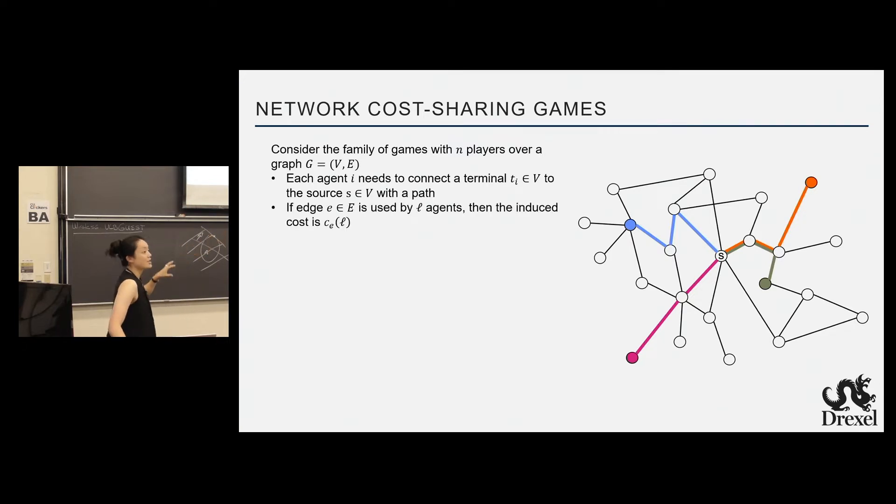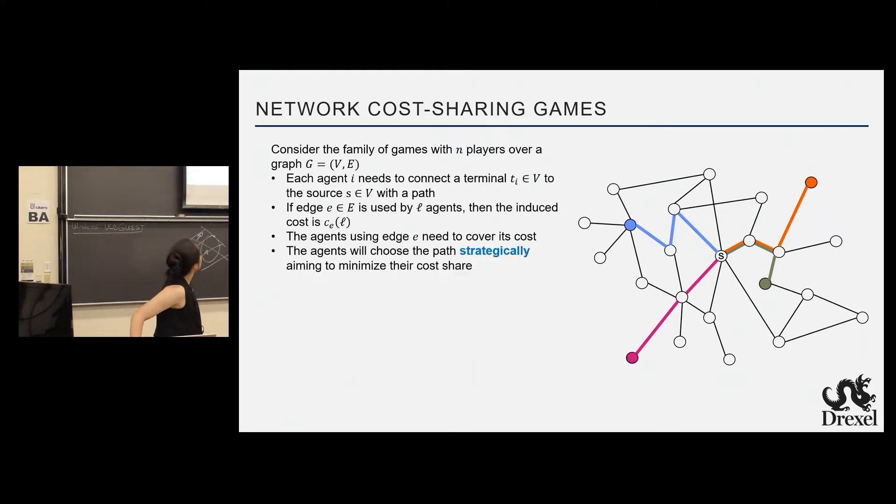Now each edge has a cost, and then the cost is a function defined by the load on the cost. So if, for example, for some of the edges, the load is two, like the orange and the green agent actually share it. And for the rest of the edges, the load is one. The agent using an edge needs to cover the cost incurred by their existence. And the agent will choose the path strategically aiming to minimize their cost share. So initially in this line of literature, or the first thing that people come to mind in terms of fairness, we should equally share the cost, right? Because both of us are using it. Why am I paying more than you?